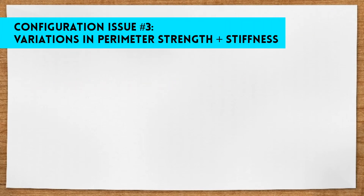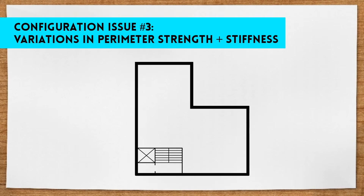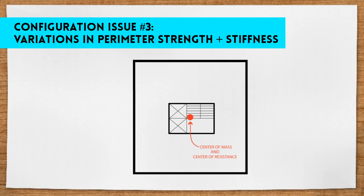The third issue is variations in perimeter strength and stiffness. A building's seismic behavior is strongly influenced by its perimeter design. If there is a variation — for example, a steel moment frame structure with one concrete stair core on one corner — it causes the center of mass and the center of resistance to misalign, leading to torsion. This is also why we often see elevator and stair core structures located at the center of a large building, so that the center of mass and the center of resistance are aligned.